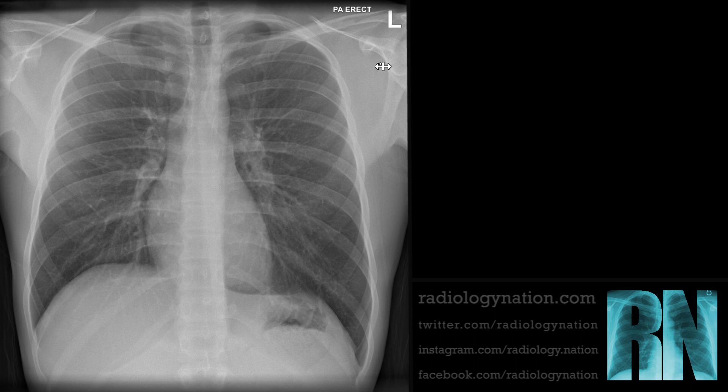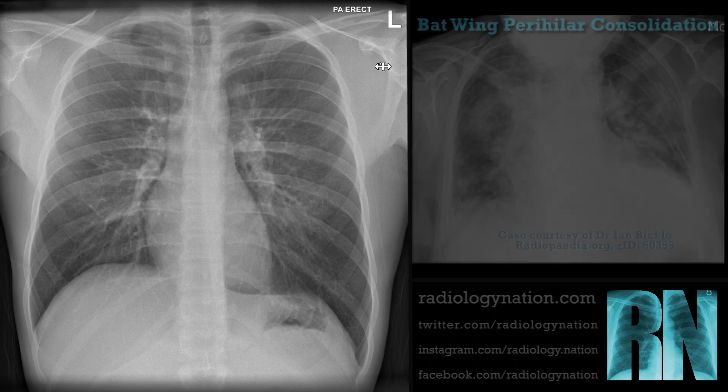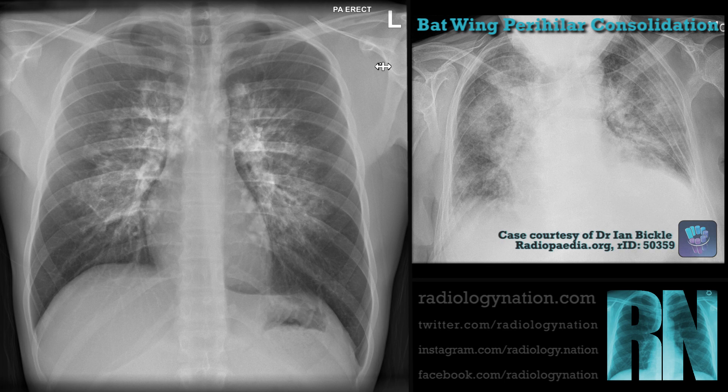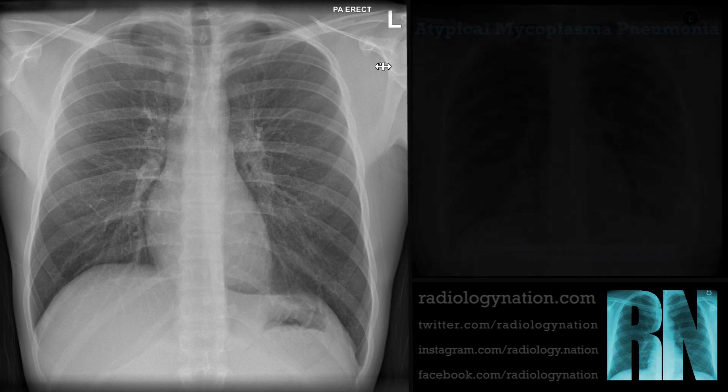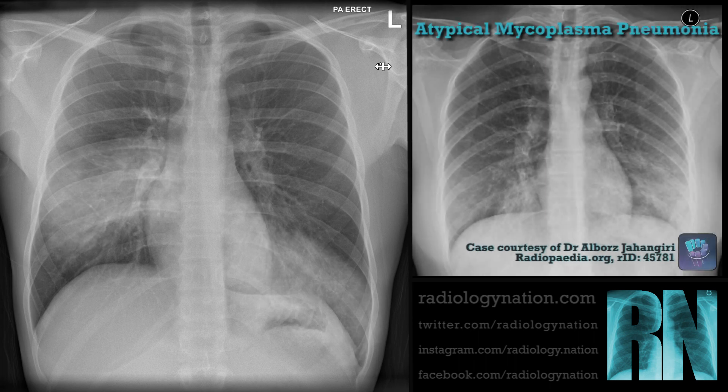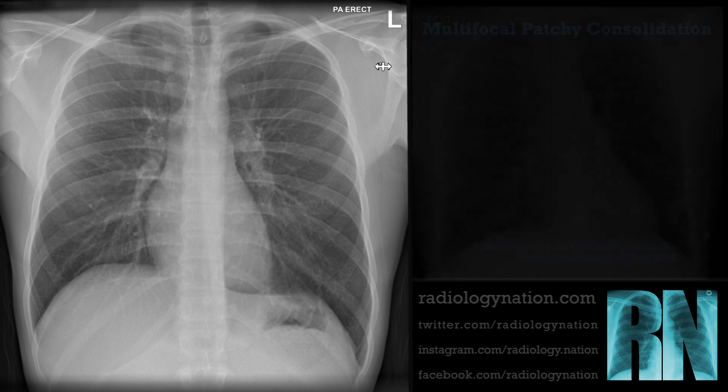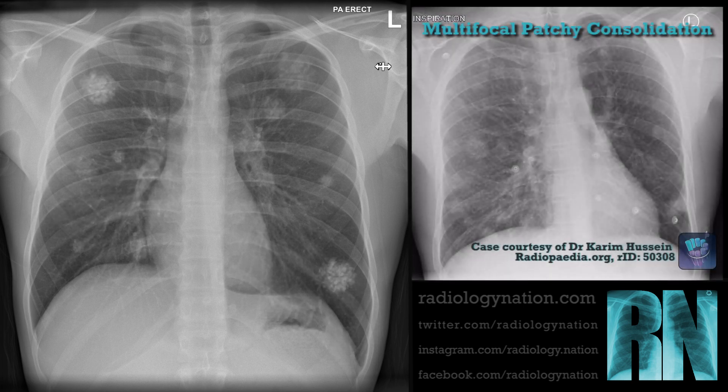In this video, we have shown examples of consolidation limited to a single lobe. However, bilateral batwing perihilar consolidation is often seen in pulmonary edema. Certain causes of pneumonia, such as atypical bacteria and viruses, can present with bilateral disease. Multifocal patches of consolidation are associated with septic emboli, autoimmune disease, and traumatic contusions.